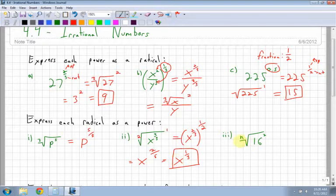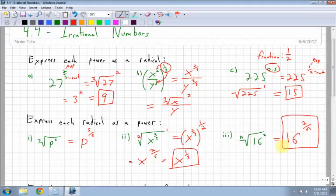Last one I have here is 16 squared, and it's the nth root. So I'm not actually given a number here. So this is going to demonstrate how this actually works. So 16, my exponent is 2, my root is n, and that's all you can do for that one. Exponent goes on top, root goes on the bottom.